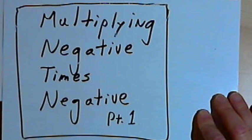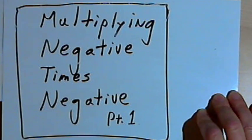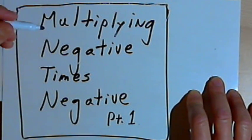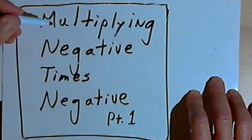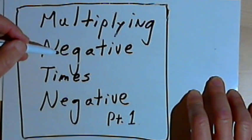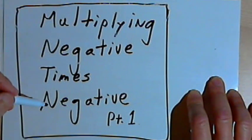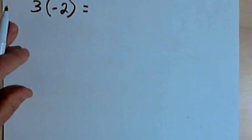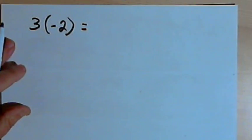This video is provided as supplementary material for courses taught at Howard Community College. This is going to be the first of two videos explaining what happens when you multiply negative numbers times negative numbers. I want to start, though, with a positive times a negative.